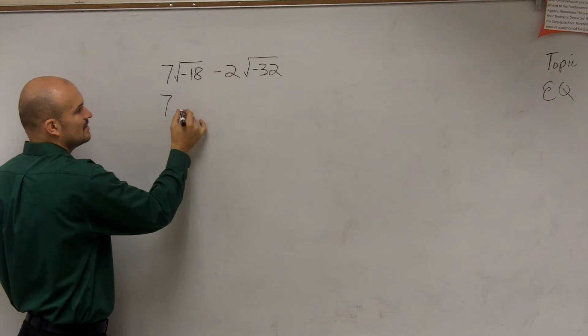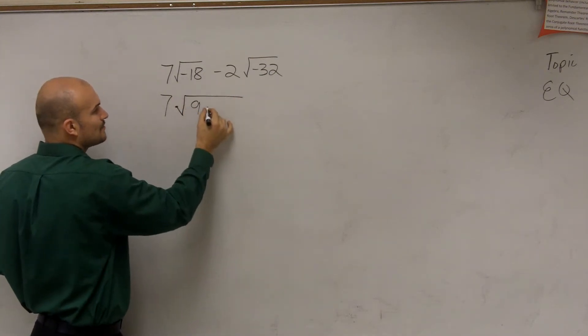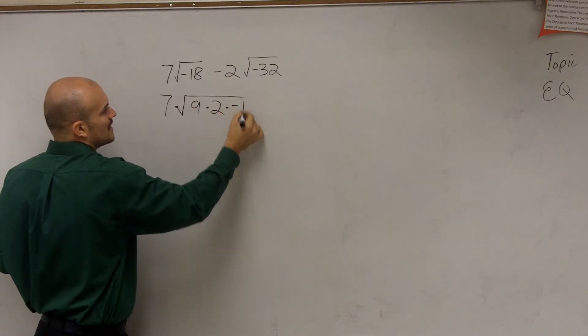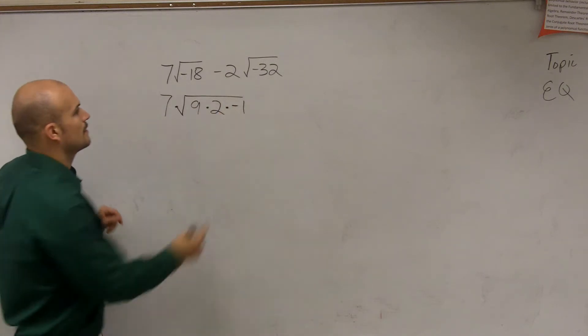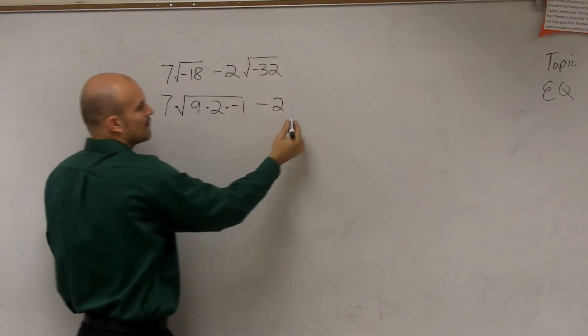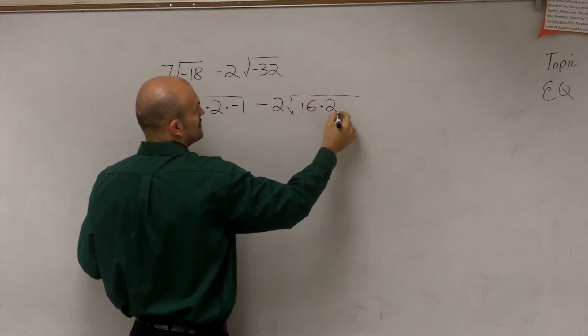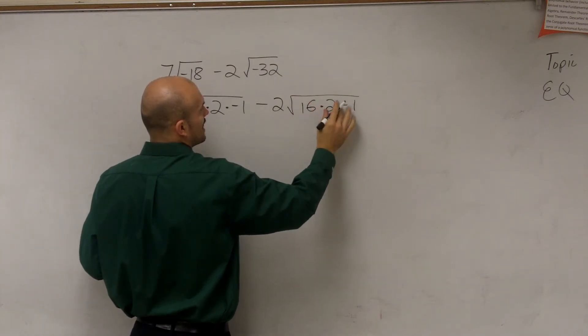So I'm going to have 7 times, we're going to rewrite this as 9 times 2 times negative 1 minus 2. If I simplify my radical, I can simplify that to 16 times 2 times negative 1.